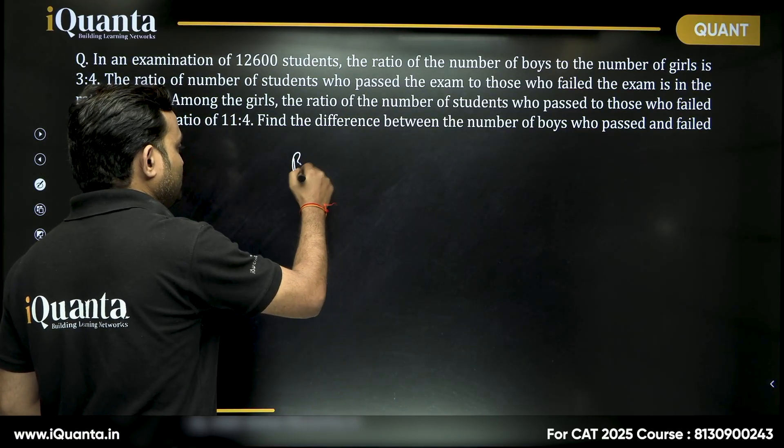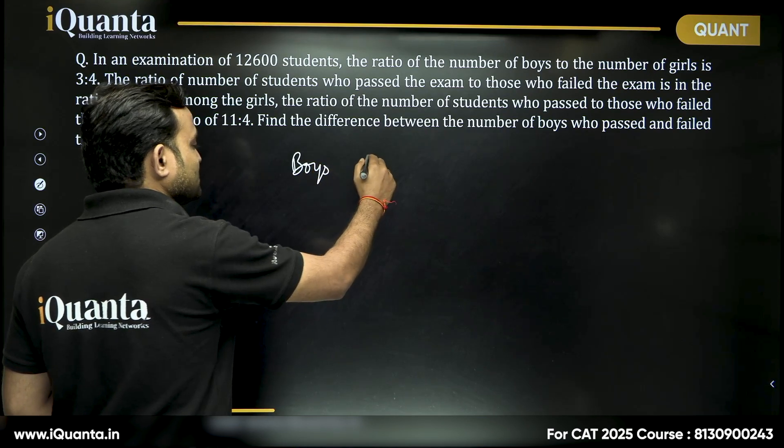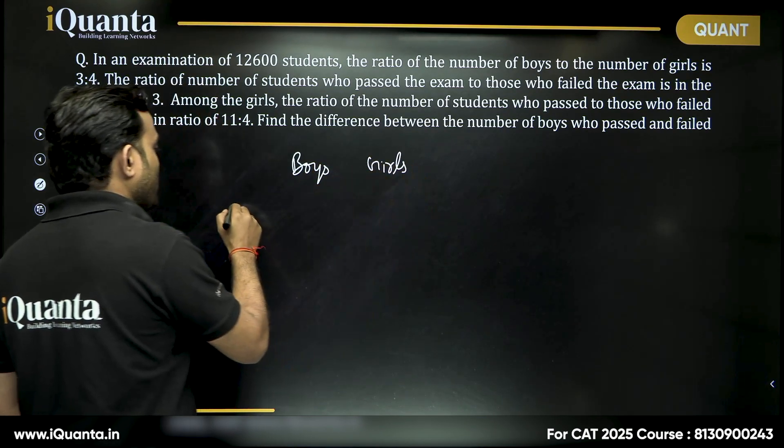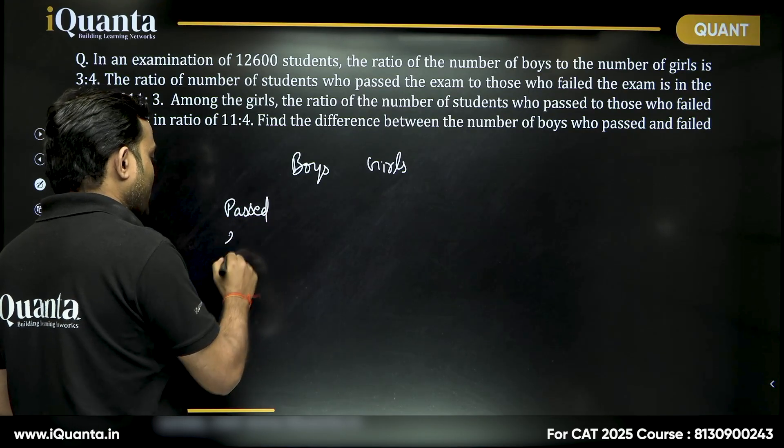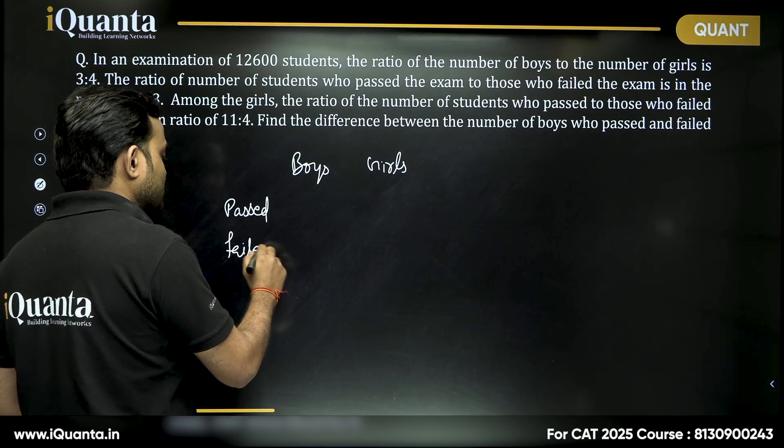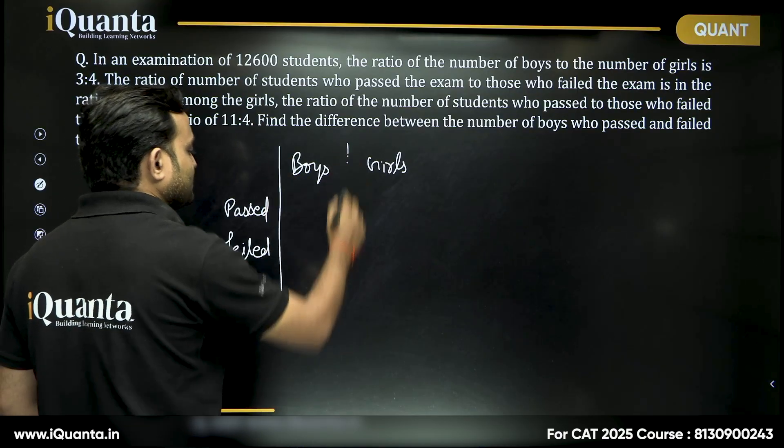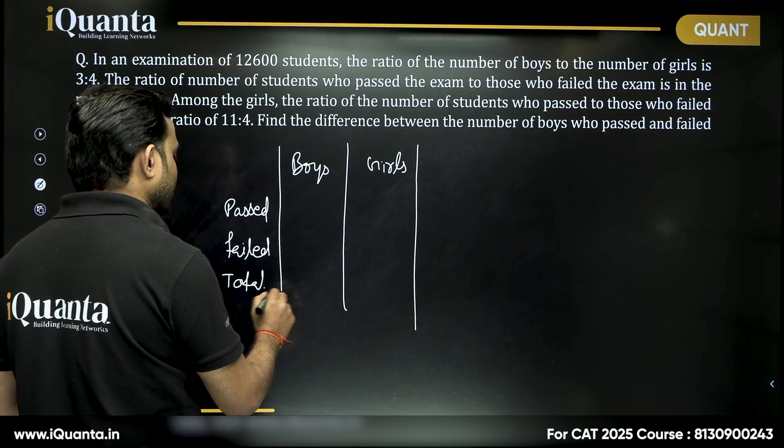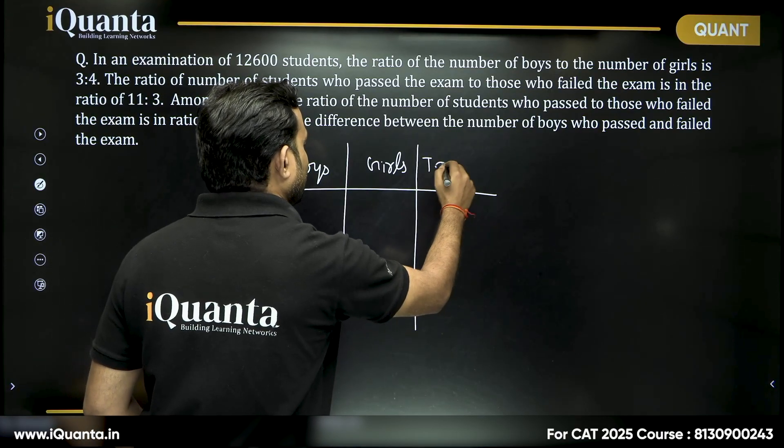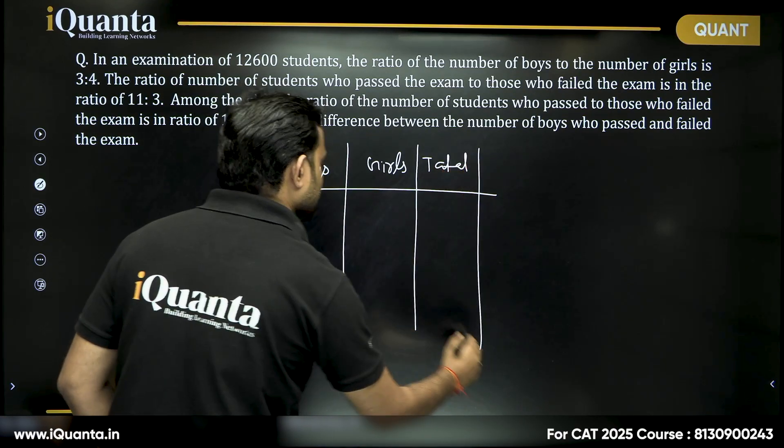We have boys, we have girls, we have boys who passed the exam, we have students who have failed this exam and then we have total given as well. In case of this as well, total is given.